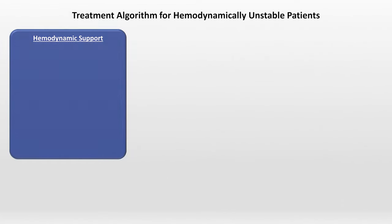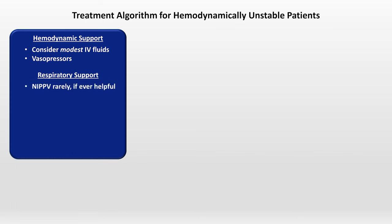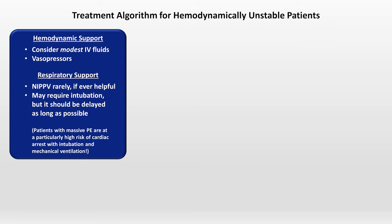For hemodynamically unstable patients, first consider hemodynamic support. While fluids are a mainstay of shock treatment, with massive PE in which the RV is already pressure overloaded and overstretched, excessive fluid can be detrimental — so if fluid is given, it should be very modest in volume. Vasopressors may be necessary, but there is no consensus on which one should be first line. Non-invasive positive pressure is rarely if ever helpful, and intubation should be delayed as long as possible, largely because patients with massive PE are at a particularly high risk of cardiac arrest with intubation due in part to an abrupt drop in their RV preload.